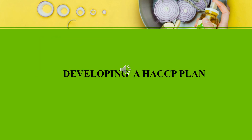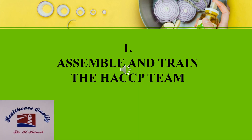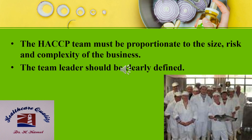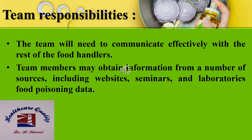Developing a HACCP plan goes through 12 steps. The first step is to assemble and train the HACCP team. The team must be proportional to the size, risk, and complexity of the business, and the team leader should be clearly defined. The team needs to communicate effectively with the rest of the food handlers. Team members may obtain information from a number of sources, including websites, seminars, and laboratory food poisoning data.